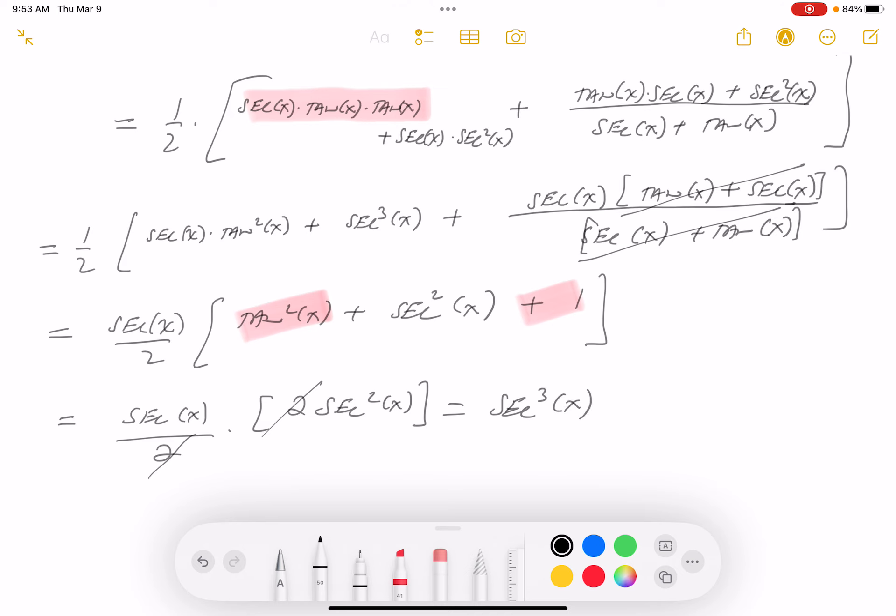I'm going to look at the answer key, and I'm hoping to see it. Do I see it? I do. It's choice A. Thank you.